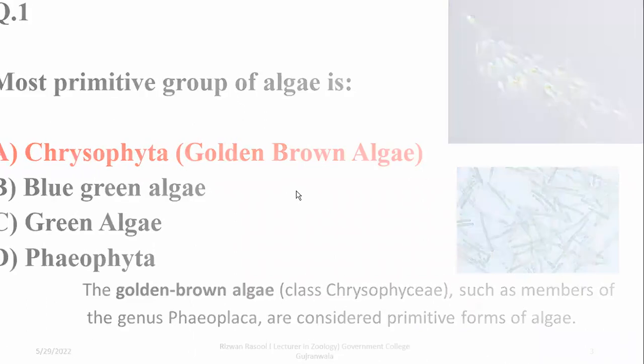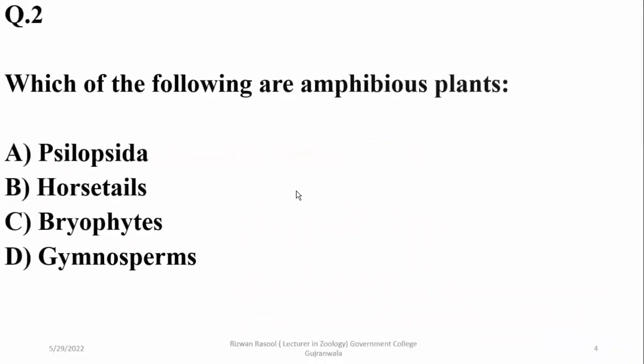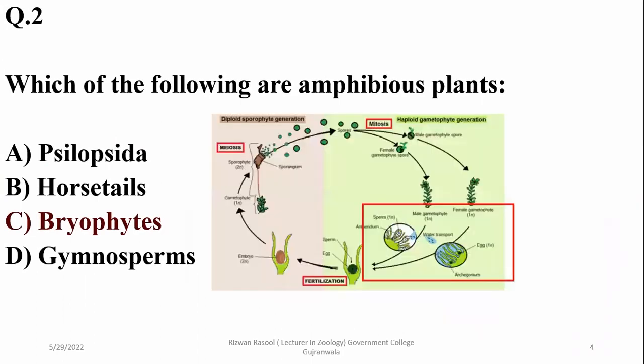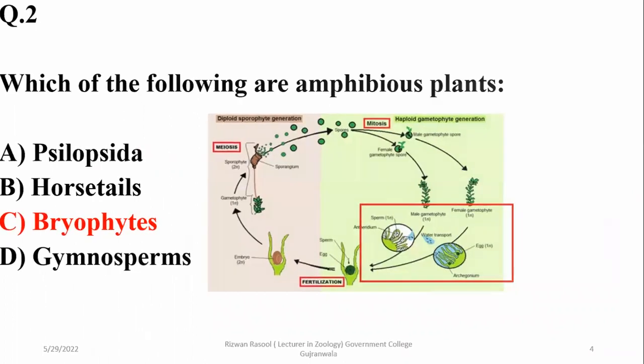Question two was about which of the following are amphibious plants. Amphibious plants require water for their fertilization and they are bryophytes. So the right option for number two is C (Charlie).